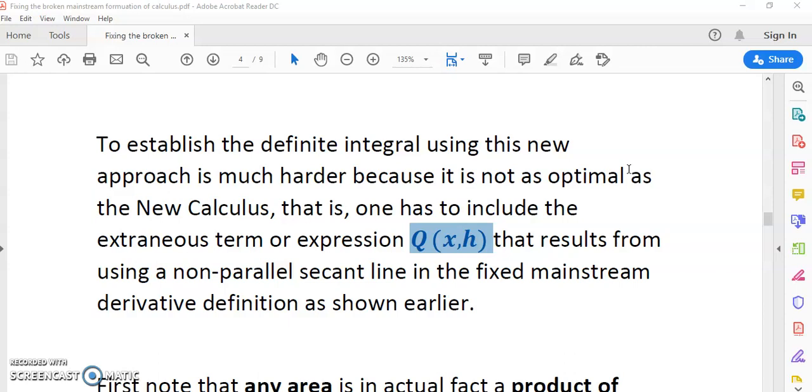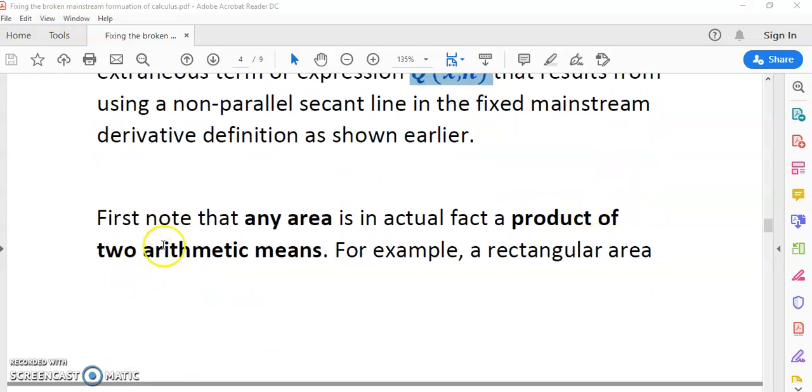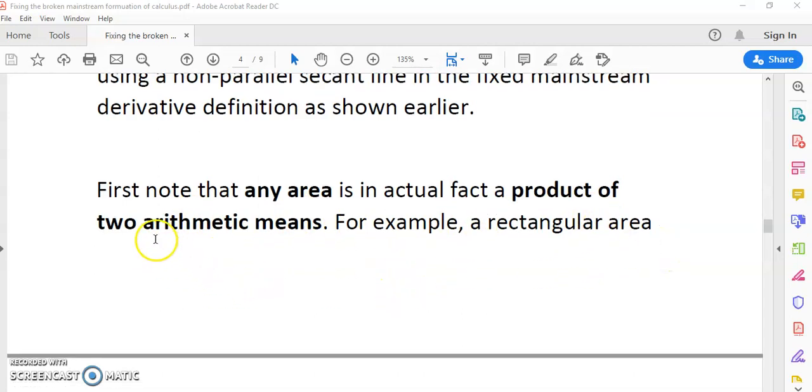This is much harder because it's nowhere near as optimal and well-formed as the new calculus. In other words, it uses a non-parallel secant line in which old Newton and Leibniz and all the others were desperately trying to solve the tangent line problem but failed miserably. So being the first to solve the tangent line problem in human history, to me, is a big deal. But it seems that no one else wants to acknowledge this, and the reasons are obvious.